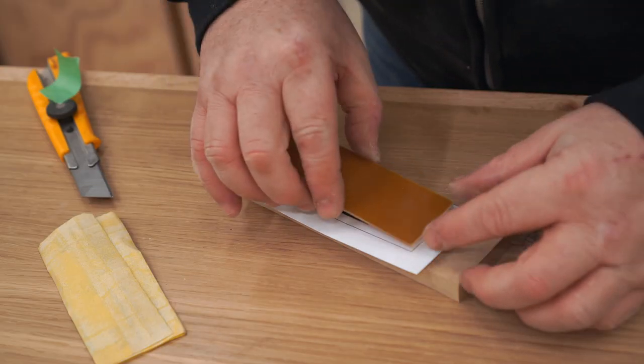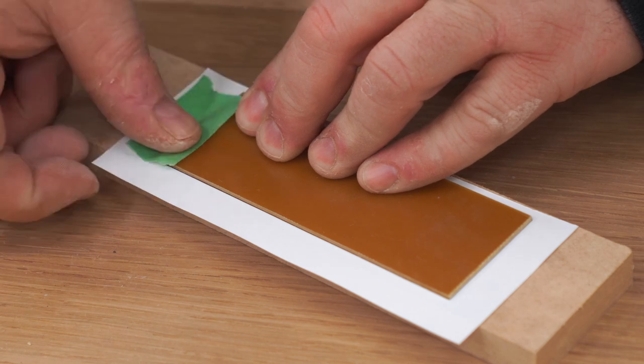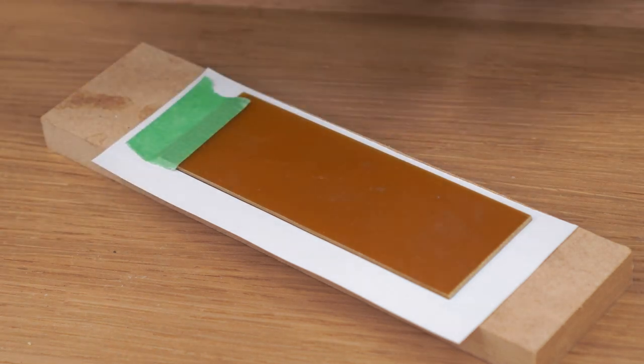Then I can take the board and position it over the print and line it up with the border. And I'm going to use pieces of tape, one on each end, to hold it in place.